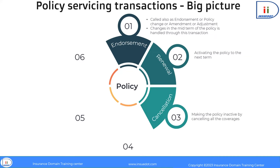A policy can be cancelled either by the insured or the insurer for various reasons. An insured may cancel the policy because they sold the insured house, found an alternative insurer with a lower premium, or needed a higher coverage policy with another insurer. These reasons may lead to the cancellation of the existing policy.